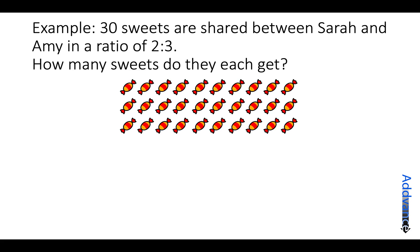So there's 30 sweets and it's shared so that Sarah gets 2 shares and Amy gets 3 shares. The order it's written in the question is the order of the ratio. So Sarah goes first, she gets 2 shares, and Amy goes last, she gets 3 shares.